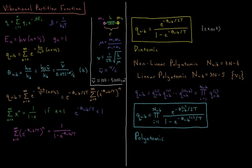Here c is the speed of light in centimeters per second, h is Planck's constant, and kB is the Boltzmann constant. The Boltzmann constant in wavenumbers is 0.695 wavenumbers per kelvin, so theta vib is just about 1.4 times nu bar. Typical values for vibrational temperature you'll see are on the order of about 200 to 7,000 kelvin.